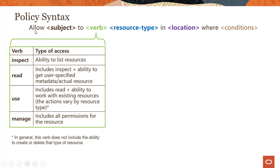First thing: there is no deny syntax, because everything is denied by default. So you have to explicitly allow. Otherwise, as we saw in the previous module, if you don't write a policy, that's as good as writing a deny policy — you are basically locked out. Your users cannot do anything in the Oracle Cloud Infrastructure environment.